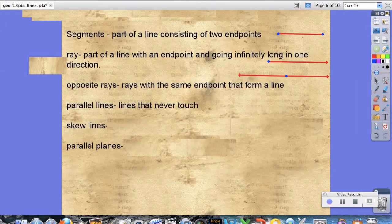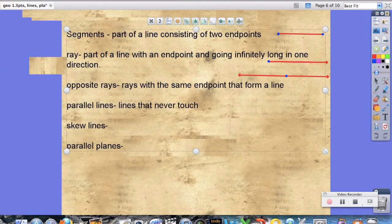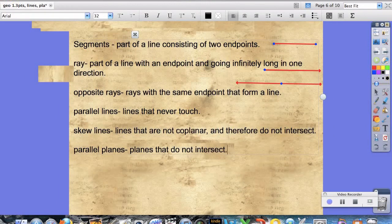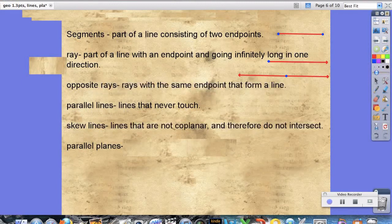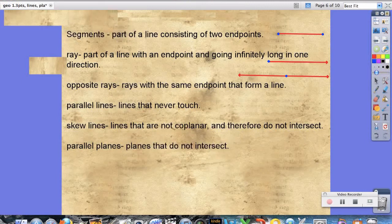Parallel lines are lines that never touch. So think of railroad tracks. The railroad tracks are always going to go in the same direction, but will never cross, because obviously that would be trouble. Skew lines are lines that are not coplanar, and therefore do not intersect. Parallel planes are planes that are parallel. Two planes that are never going to touch.